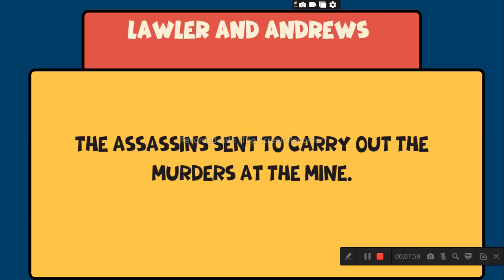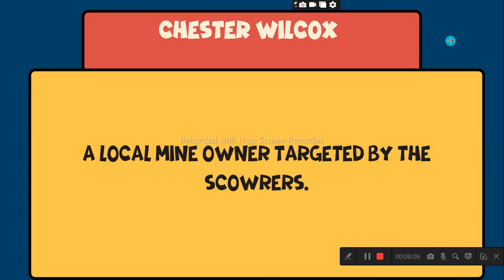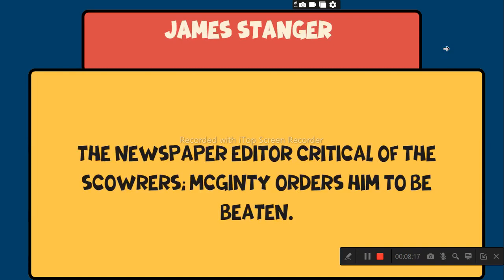Lawler and Andrews are the assassins sent to carry out the murder at the mine. Chester Wilcox is a local mine owner targeted by the Scourers. James Stanger is the newspaper editor critical of the Scourers; McGinty orders him to be beaten.